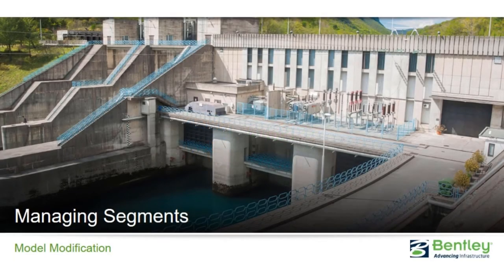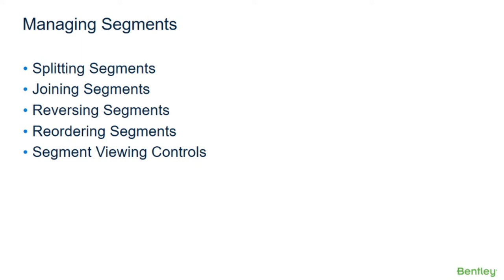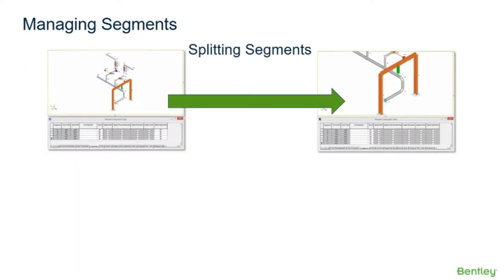The final topic of this class is managing segments. In this section we are done with the analysis of the piping model, but we will learn how to work with our segments. We will walk through splitting segments, joining segments, reversing segments, reordering segments, and using our segment viewing controls.